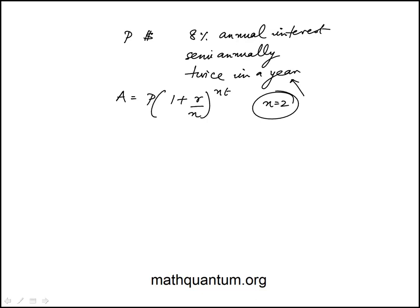If we apply it here, they tell us that the total value after one year is $10,816. And the question is, what was the value of P?